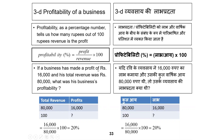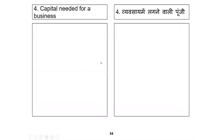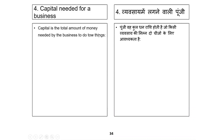You remember that in the 4C plus C framework, the fourth element was capital — Punji. So let's see what it is. Punji is that thing or that money which can work for two things.